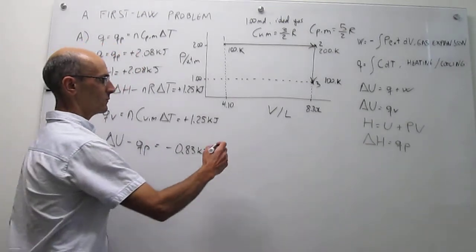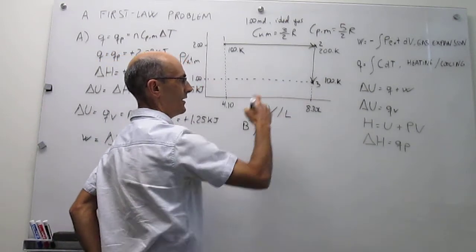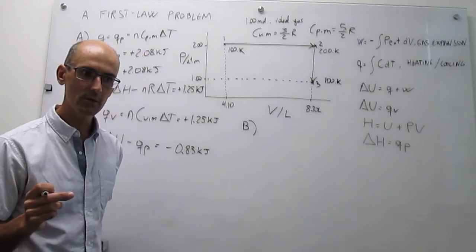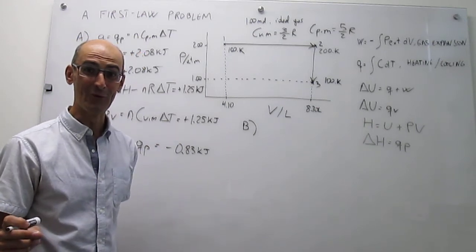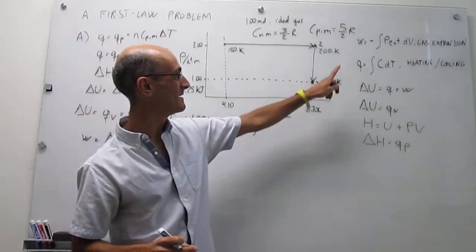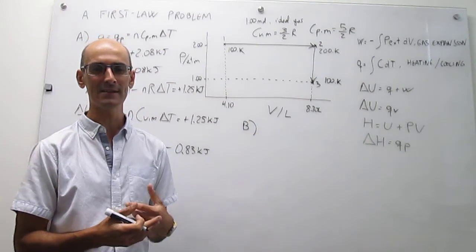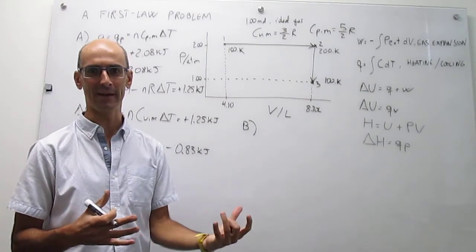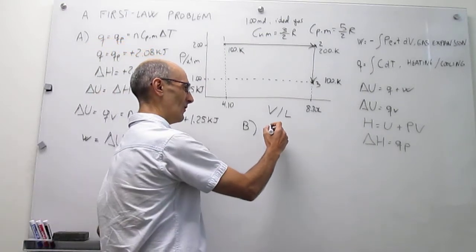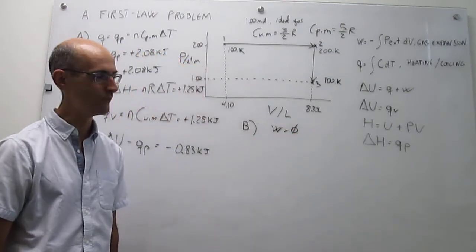Let's do step B, from two to three. Notice that the process is now at constant volume. So right away we know what the work should be: W = −P_ext·ΔV, but if there's no change in volume, then there is no work. This is simply an ideal gas, so you can't extract electrical or magnetic work. Work is equal to zero.